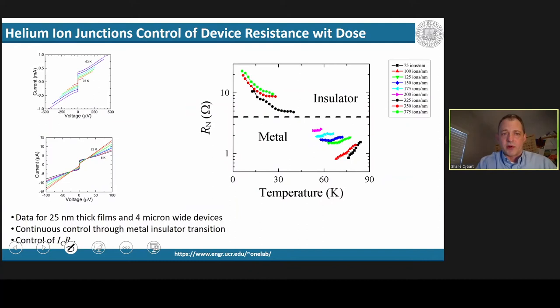Here's an example of some of those first devices that we made in collaboration with Carl Zeiss. The upper set shows the current voltage characteristics for a metallic barrier-type squid, whereas the bottom curve shows a set of voltage characteristics for an insulating barrier squid. This was the first demonstration of an insulating barrier Josephson junction in all high-TC materials.